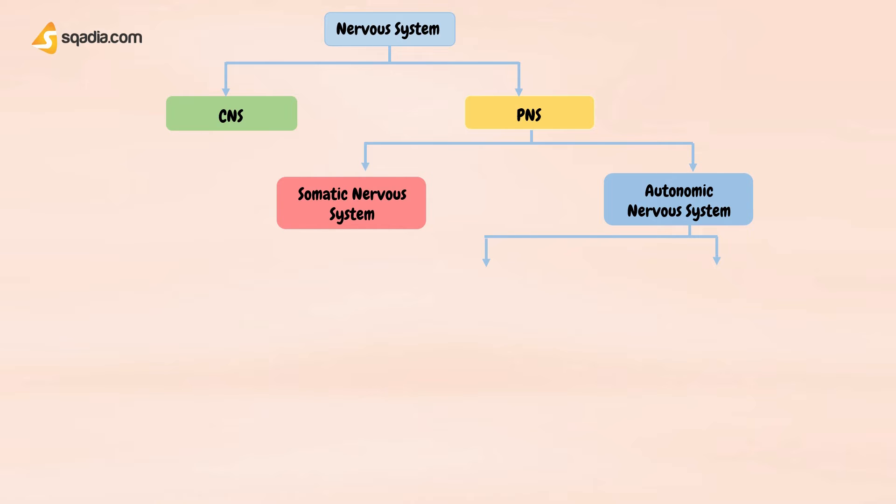The peripheral nervous system allows us to process information between our bodies and our environments. Autonomic nervous system is further classified as sympathetic nervous system and parasympathetic nervous system.